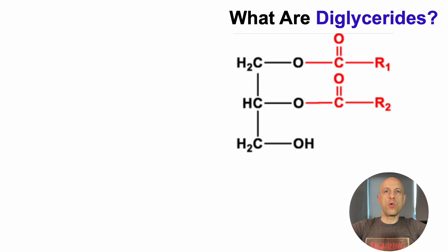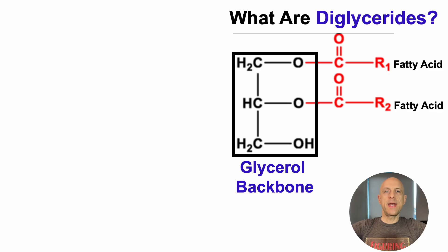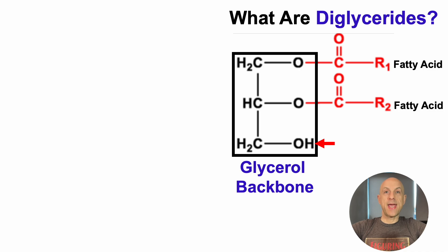This is the chemical structure for a diglyceride. We can see that diglycerides contain two fatty acids connected to a glycerol backbone. And if this metabolite had a third fatty acid, that would be a triglyceride. So diglycerides equal triglycerides with one less fatty acid.